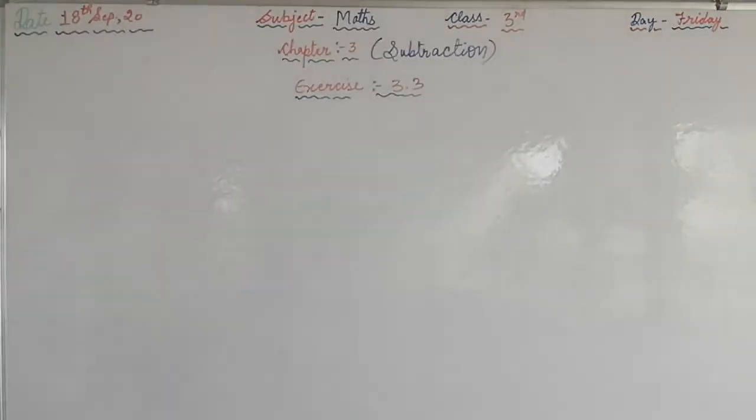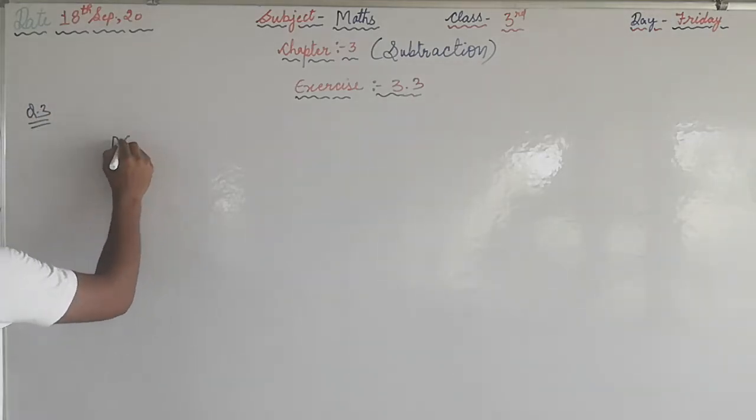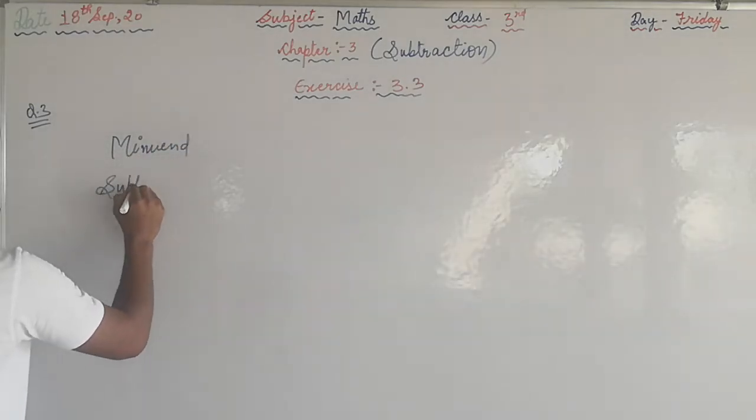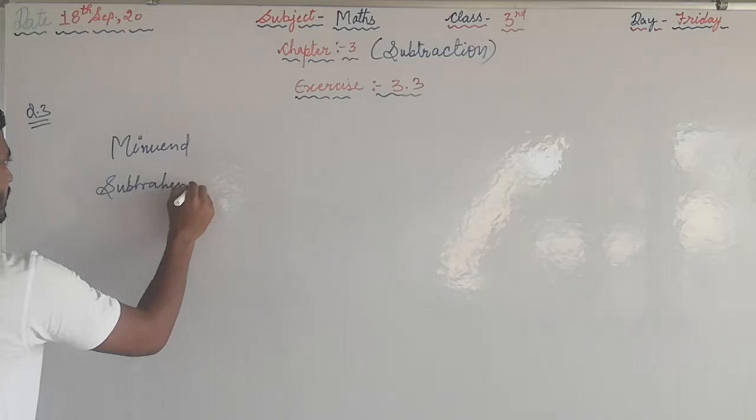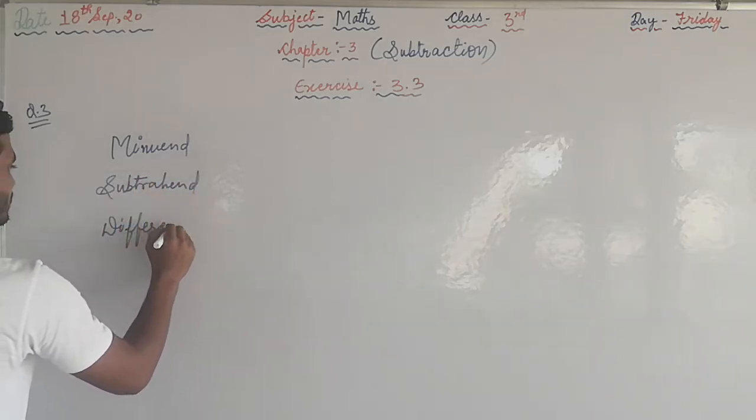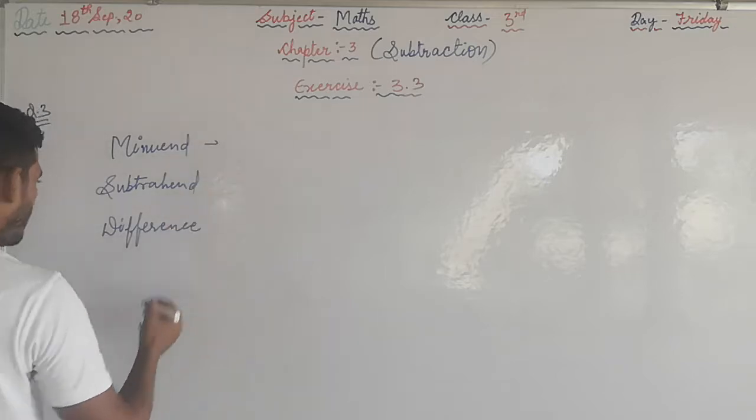See the third question. Minuend is given here, and subtrahend is also given, and difference is given in the question. What is the minuend? 8420.